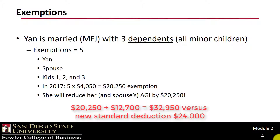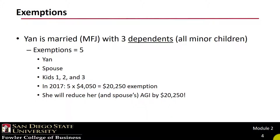Obviously, that compares negatively to the $24,000 standard deduction and no exemptions now in place. That is partially made up by the lower rates that we have seen, and a greater child tax credit, which we haven't seen yet.